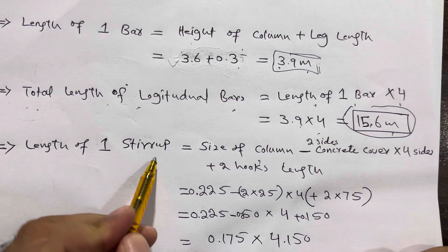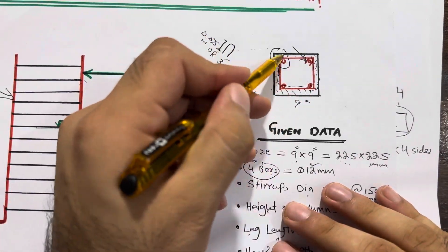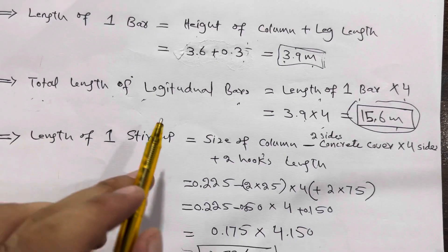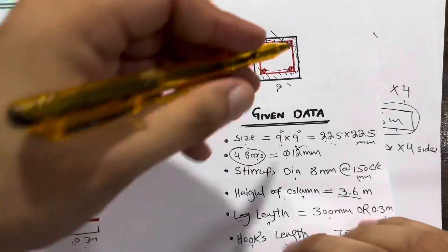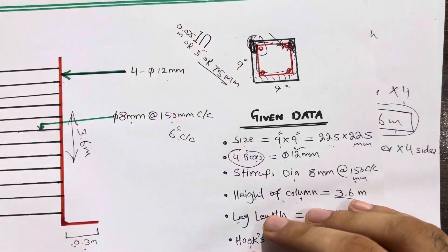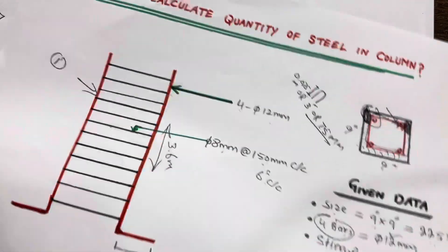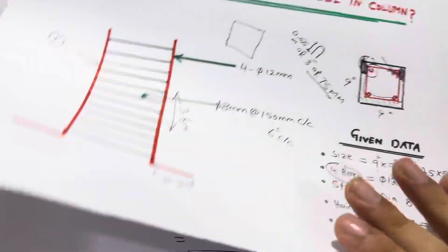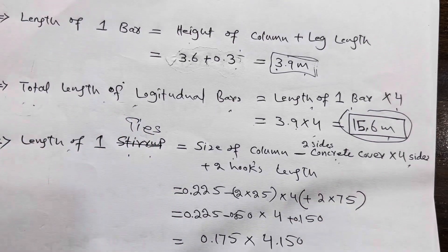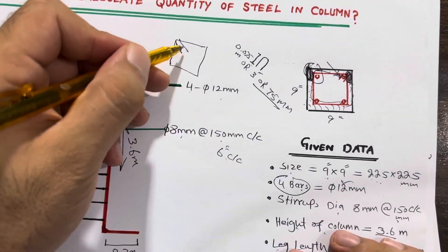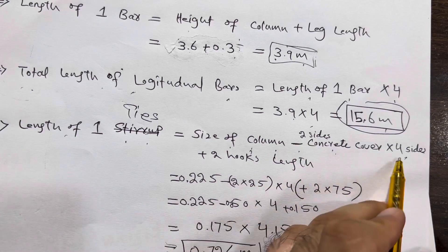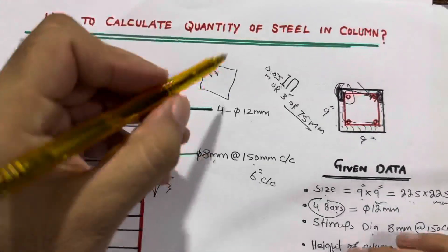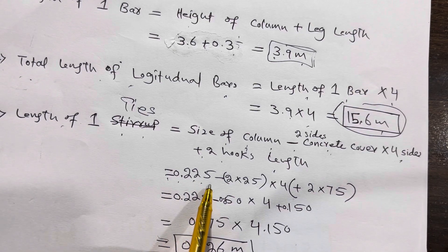Next, the length of one lateral tie (not stirrup — these are ties). The length of one tie equals: size of column minus two sides of concrete cover, multiplied by four sides, plus two hooks length. So the formula is: (column size − 2 × concrete cover) × 4 + 2 × hook length. The column size is 0.225 meter, the concrete cover is 25 millimeter (one inch), and we have four sides.